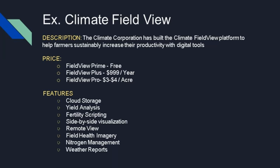The next example is Climate Field View. We're going to have a side-by-side comparison — SMS on one side and Climate on the other. Just like SMS, it has a brief description, a price for each tier package — Prime, Plus, and Pro — and then the features, for example yield analysis, remote view, and weather reports. The side-by-side comparison will show the features associated with each package, so you can see them next to each other and know which one you need.